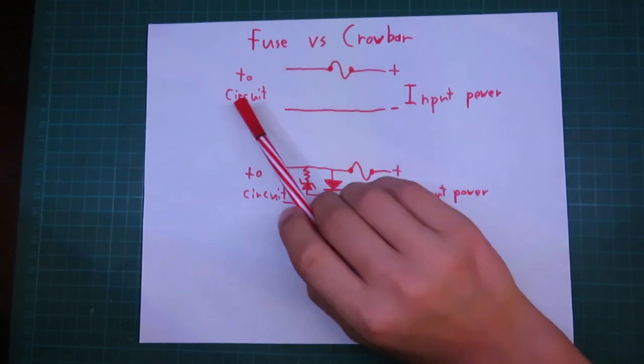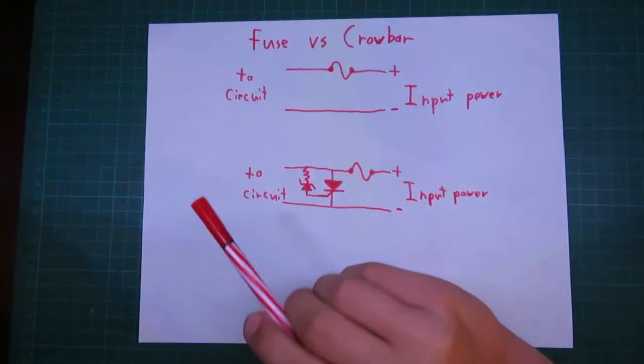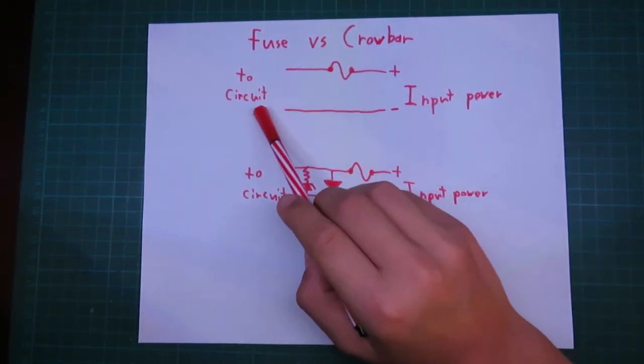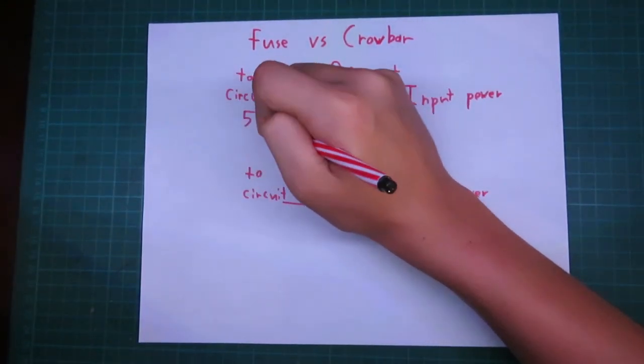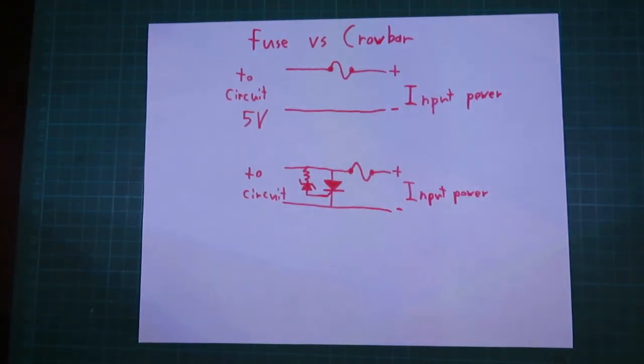So, why would you use a crowbar circuit when you can just use a fuse? Well, let's say your circuit needed a very consistent 5 volts, otherwise it would destroy some of the chips inside the circuit.